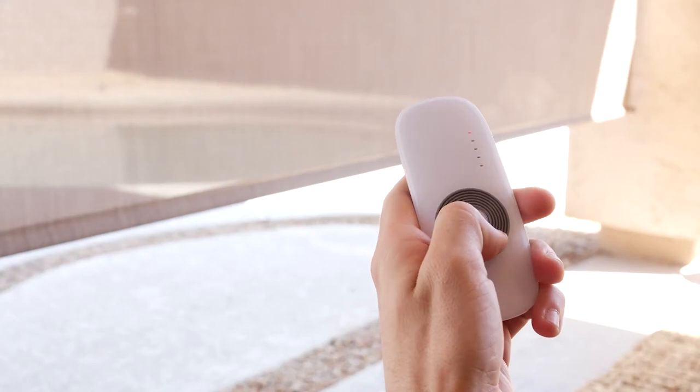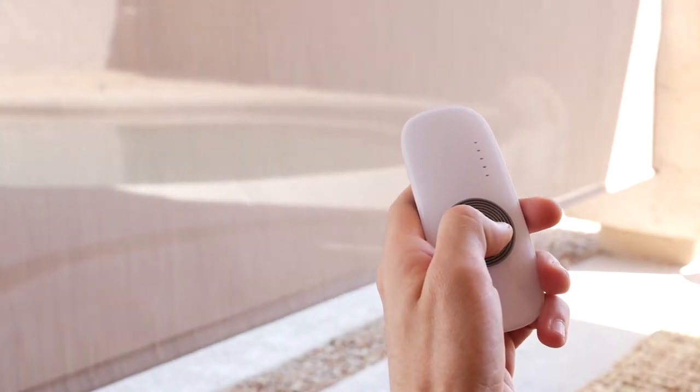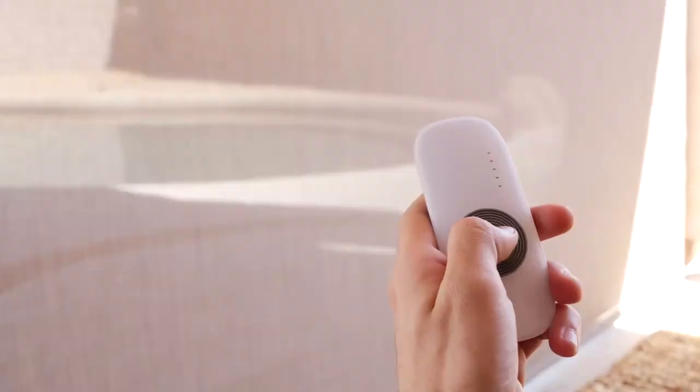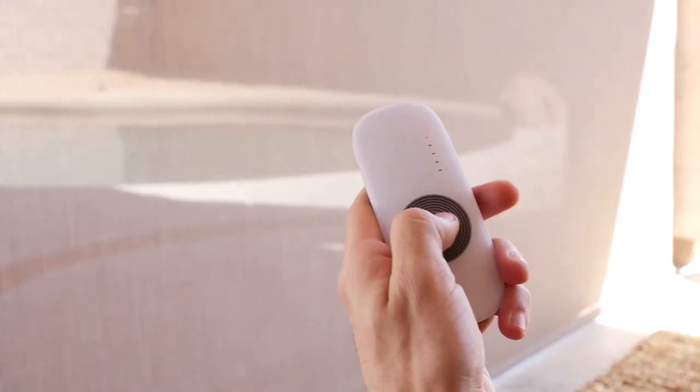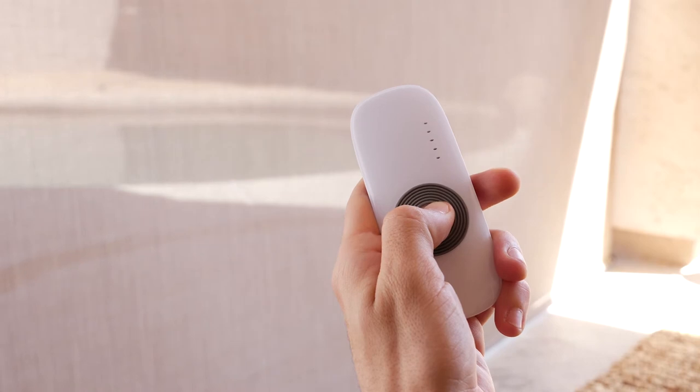To set the bottom limit, use the remote to bring your shade to a stop at the desired position. Press and hold the stop button for 3 seconds. The motor will beep 4 times, the fabric will jog, then the motor will beep one more time.